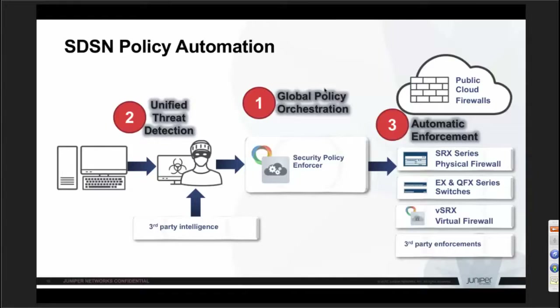Normally when an alert is generated you block it in the firewall, but the firewall is only at the gate. You also need enforcement inside the network — if one desktop is infected, you can block it from accessing outside traffic, but it will continue to infect traffic inside the network across VLANs. So you need policy enforcement at the switch port level or the wireless LAN access point level.